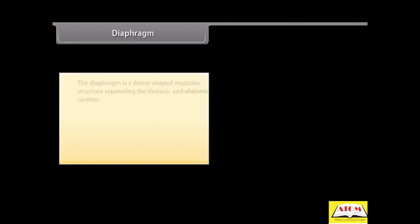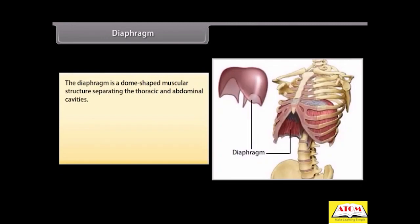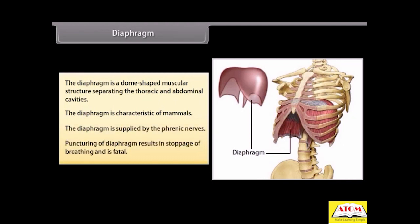Diaphragm. The diaphragm is a dome-shaped muscular structure separating the thoracic and abdominal cavities. The diaphragm is characteristic of mammals. The diaphragm is supplied by the phrenic nerves. Puncturing of diaphragm results in stoppage of breathing and is fatal.